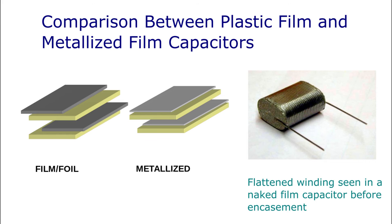There are two types of plastic film capacitors depending on electrode configuration: film or foil capacitors, and metallized film capacitors. Film or foil capacitors are made with two plastic films as the dielectric, layered with a thin metal foil such as aluminum as the electrode. Advantages of this type include easy electrical connection to the metal foil and the ability to handle high surge currents.